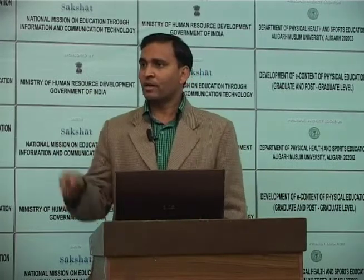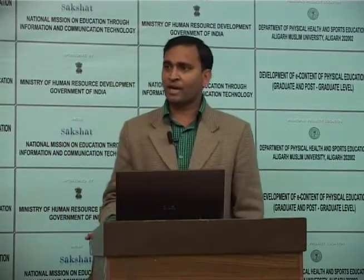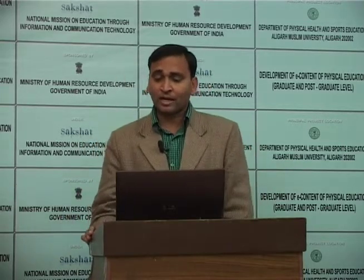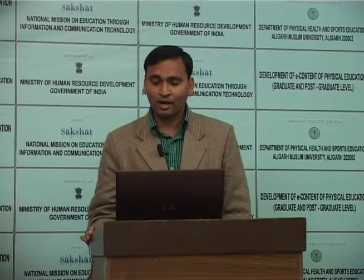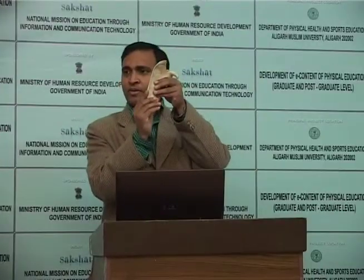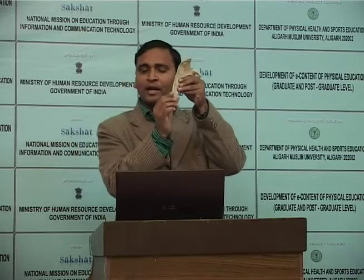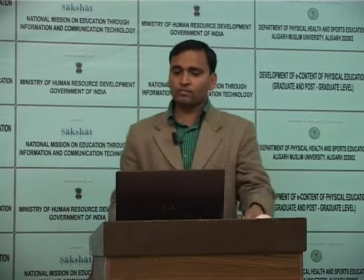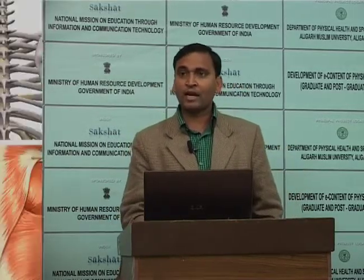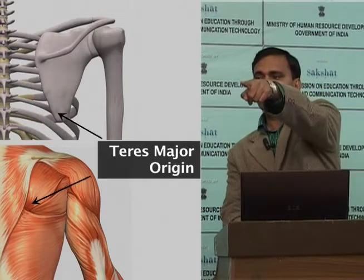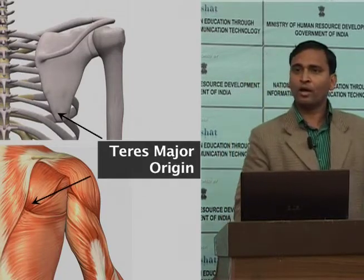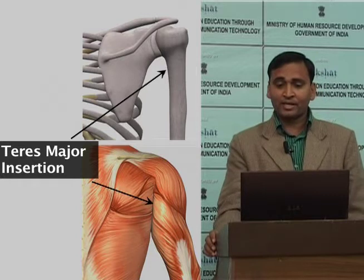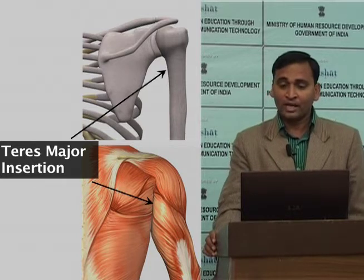I have now discussed supraspinatus, infraspinatus, teres minor, and the fourth one is the teres major muscle. The teres major muscle arises from the lateral border near the inferior angle of the scapula. The inferior angle is here and the superior angle is here. The teres major is inserted by a flat tendon into the crest of the lesser tubercle of the humerus.